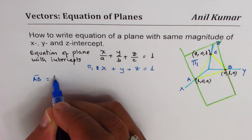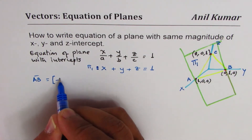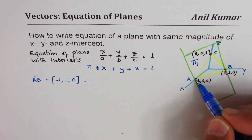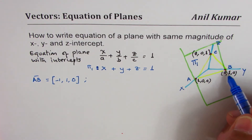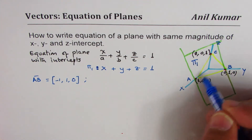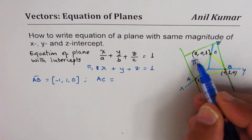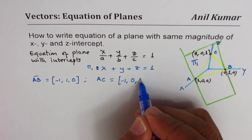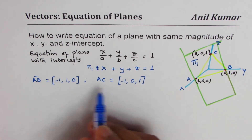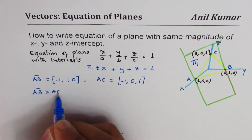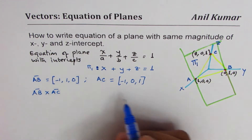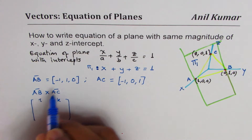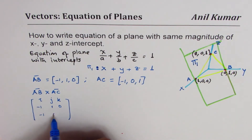The vector AB equals (0−1, 1−0, 0−0) = (−1, 1, 0). The vector AC equals (0−1, 0−0, 1−0) = (−1, 0, 1). To get the normal we cross multiply AB and AC. Using the matrix method we set up: i, j, k in the first row; (−1, 1, 0) for AB; and (−1, 0, 1) for AC.